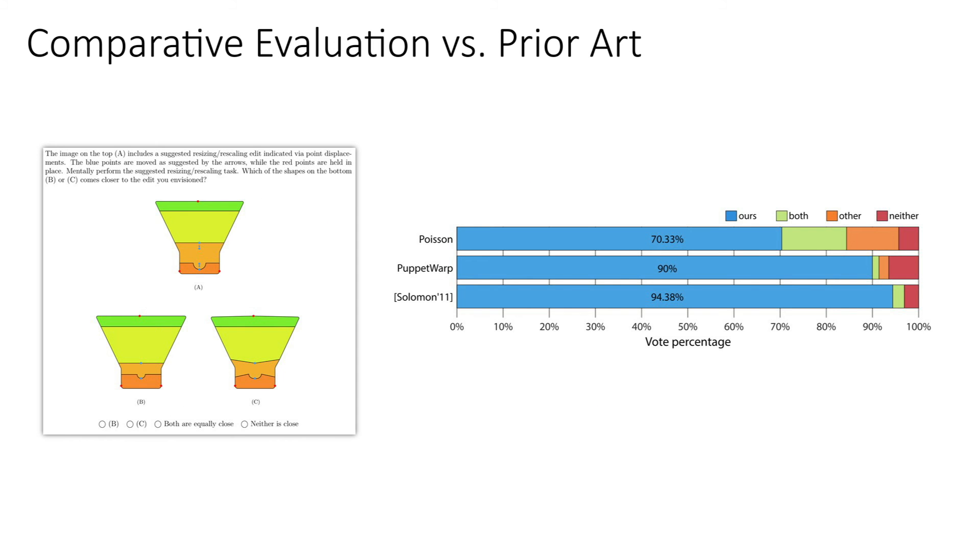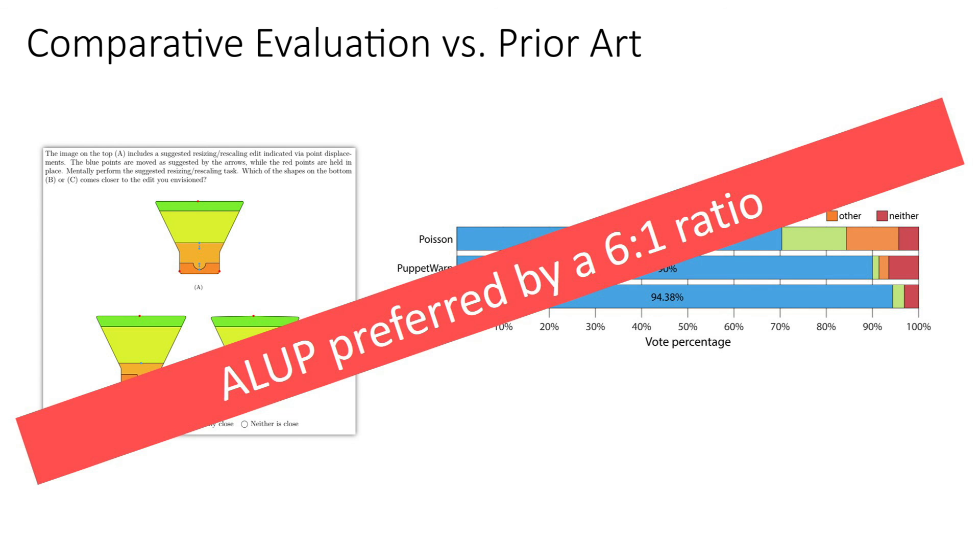In a comparative evaluation, participants preferred our outputs over the closest alternative by a ratio of 6 to 1. Please see the paper for full details.